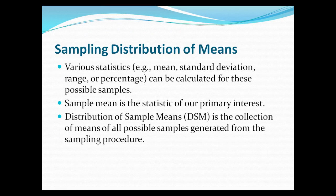Looking at the sampling distribution of means — from multiple samples you can calculate various statistics: the mean, standard deviation, as well as measures of variability. There are chapters covering measures of central tendency and measures of variability, as well as range and percentile. All of these can be calculated for these possible samples.